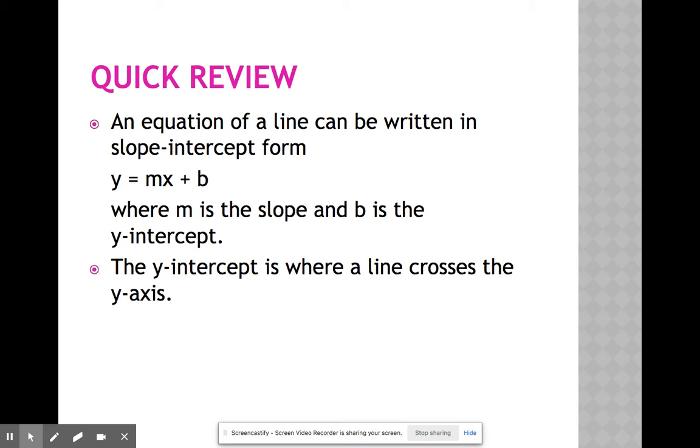An equation of a line can be written in slope-intercept form, y equals mx plus b. We've gone over this equation a lot. You need to know what these pieces are. Where m is slope and b is the y-intercept.